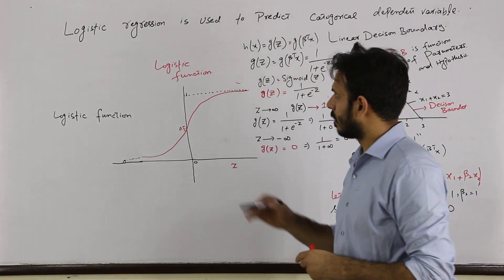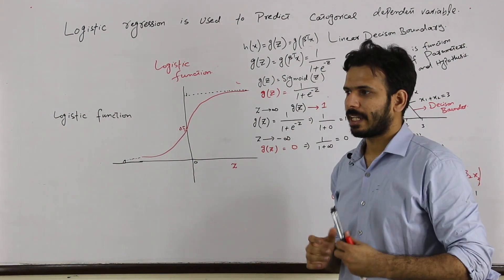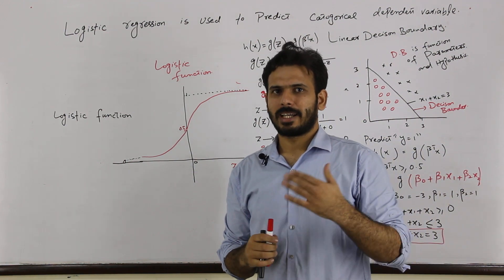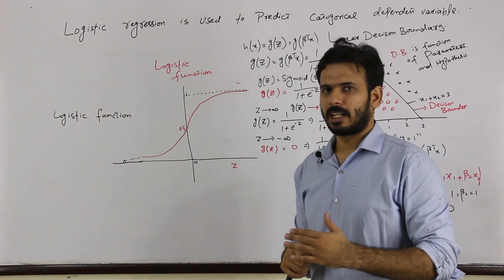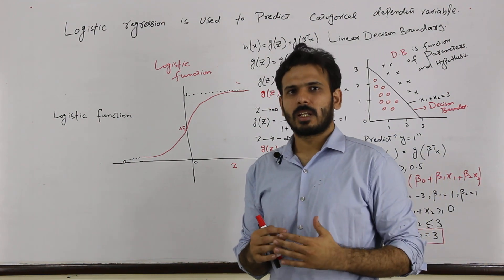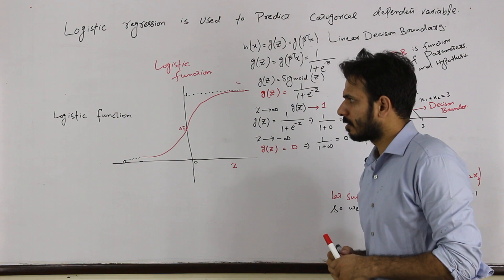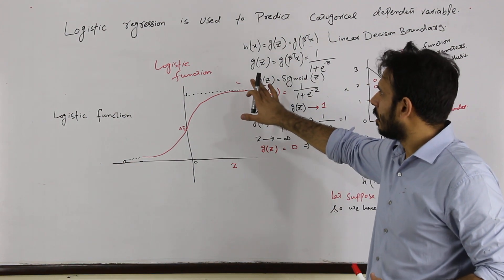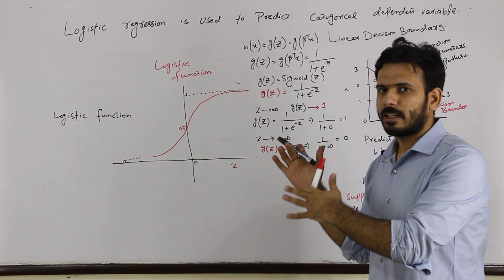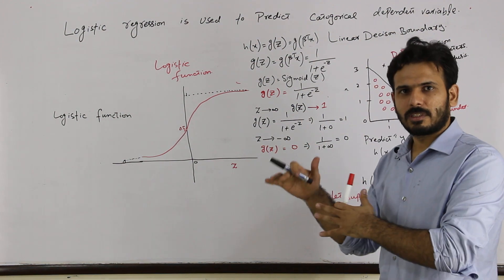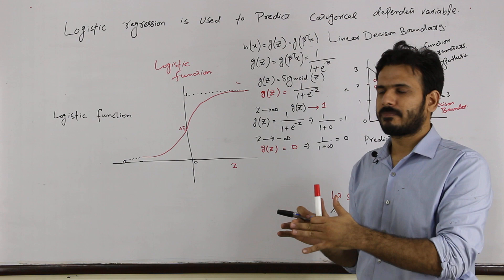What is logistic regression? Basically, logistic regression is used to predict a categorical dependent variable. Categorical means the output will be either 1 or 0 — it can be yes or no, positive or negative. You will expect only categorical variables. Logistic regression works by taking linear regression and converting it into logistic regression, converting a continuous variable into a discrete variable.